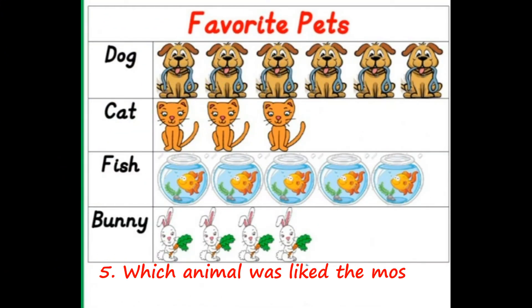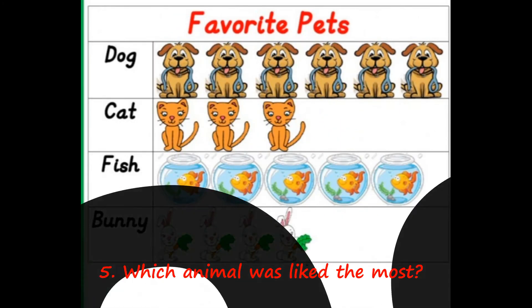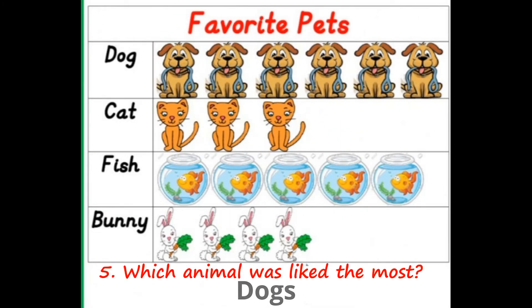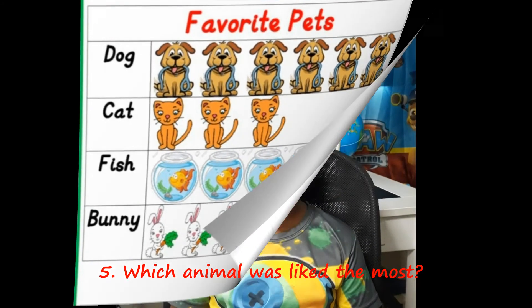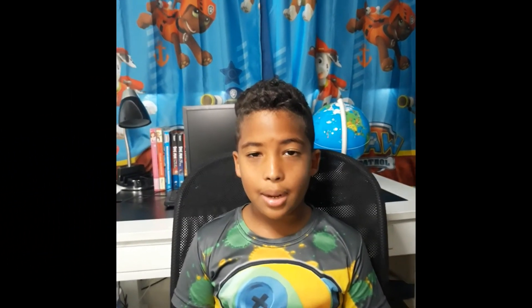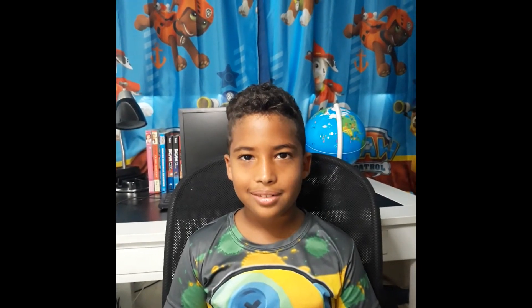Which animal is liked the most? Dogs. The data in a picture graph can be recorded using pictures or symbols.